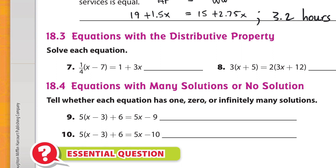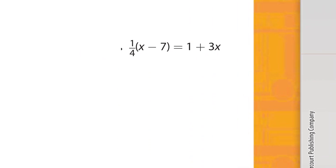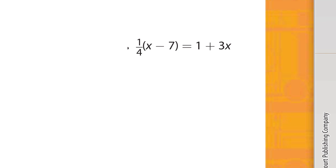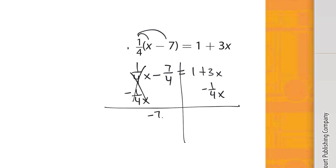Number 7 — I'll copy it and bring it over. I'll distribute the one-fourth: one-fourth times x is one-fourth x, and one-fourth times 7 is seven-fourths. So we have one-fourth x minus seven-fourths equals 1 plus three-fourths x. Since one-fourth is smaller, I'll subtract one-fourth x from both sides — these cancel — leaving negative seven-fourths equals 1 plus (three-fourths minus one-fourth)x, which is... let me work this through.